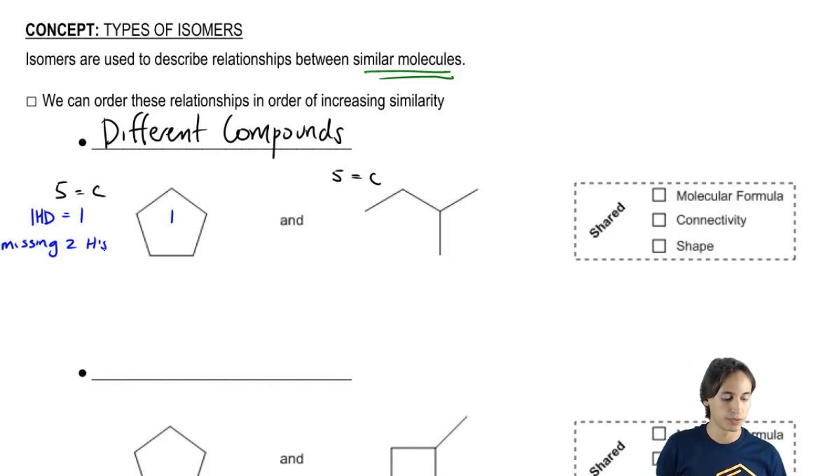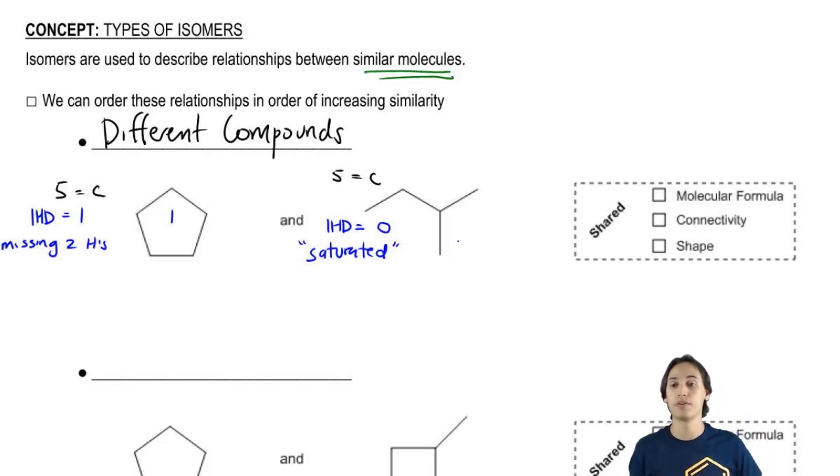Now let's look at the second one. This second one doesn't have any rings. It doesn't have any double bonds. It doesn't have any triple bonds. This one would have an IHD of zero. That means that this one is missing no hydrogens. Okay, so I'm just going to put that. This one is saturated whereas the first one is missing two H's compared to the second one.